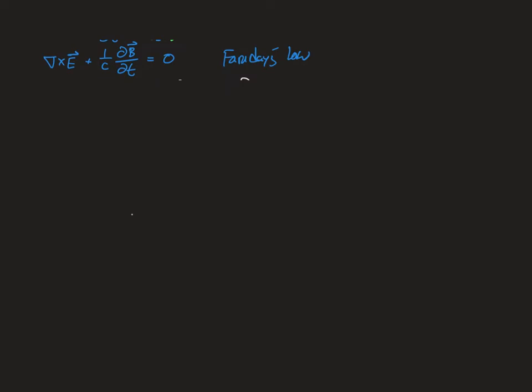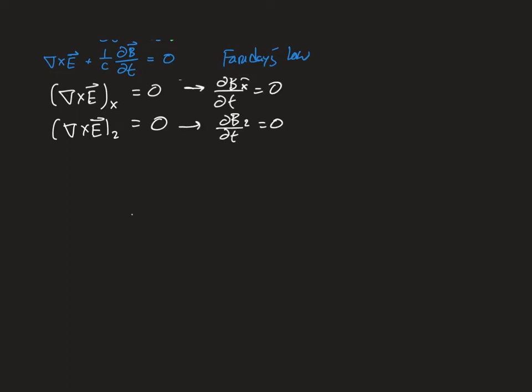Now let's take a closer look at solving Faraday's law. We've determined that the curl of E in the x and z directions is zero, which implies that the time derivative of the magnetic field in those directions is also zero — because this equation has to be true for each component individually. So we've got two vanishing components of the magnetic field: Bx and Bz.